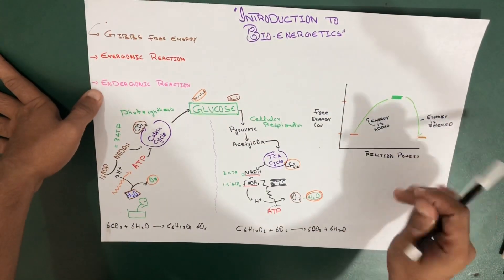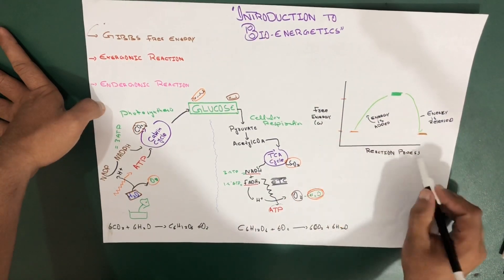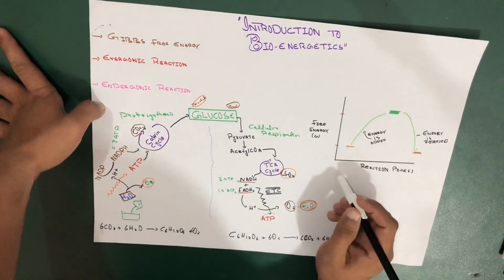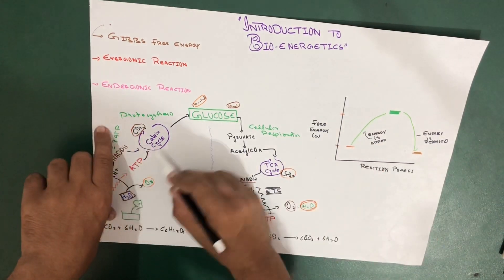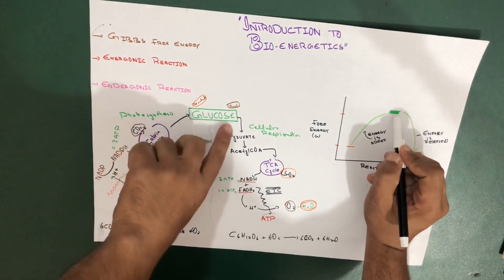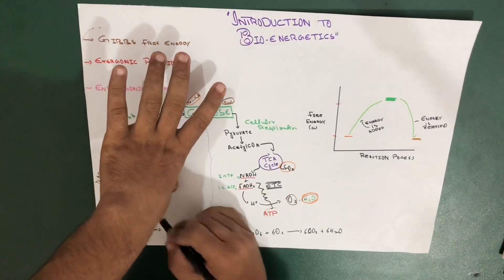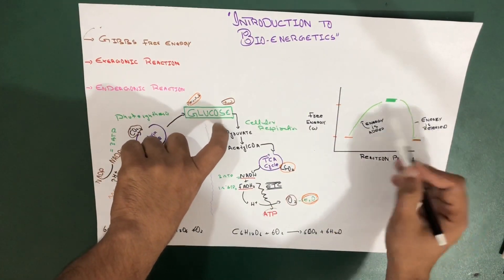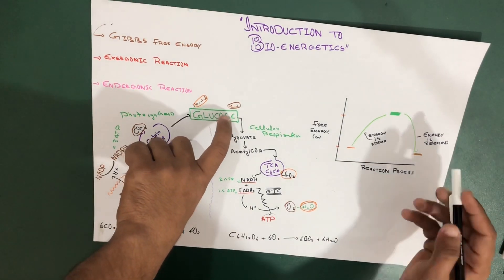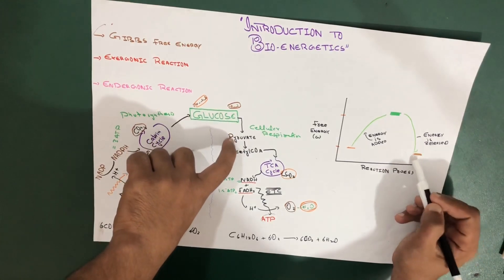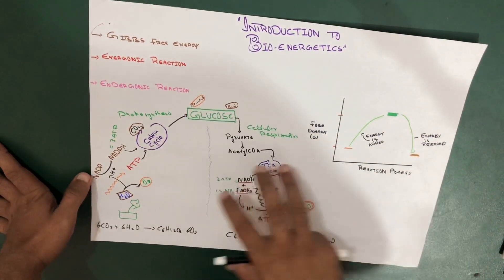Now let's compare this with the Gibbs free energy chart. On the y-axis is Gibbs free energy and on the x-axis is the reaction progress. At the start we had no energy, then when sunlight was added, the energy level increased — the chart goes up — and we finally produced glucose at the high-energy point. As we descend, glucose is broken down and energy is released. In cellular respiration, energy decreases, reaching back to where we started. The stored energy decreases while total energy remains constant.